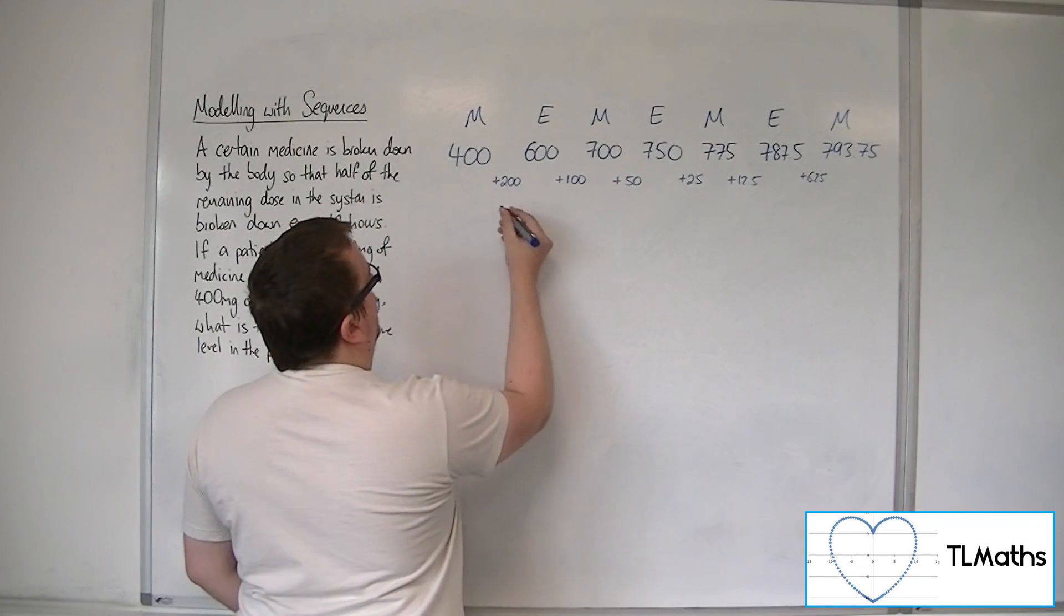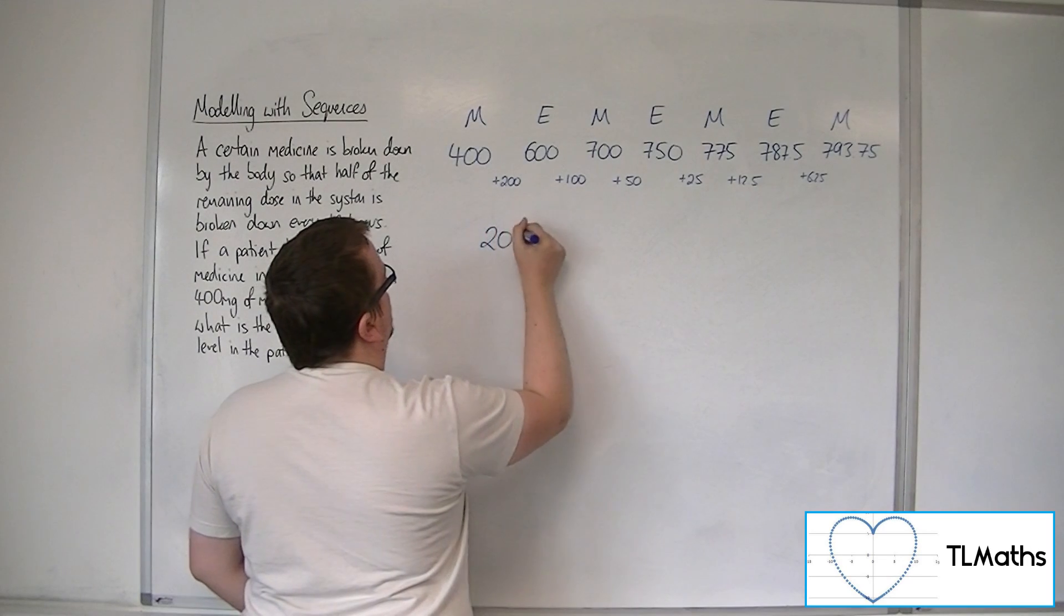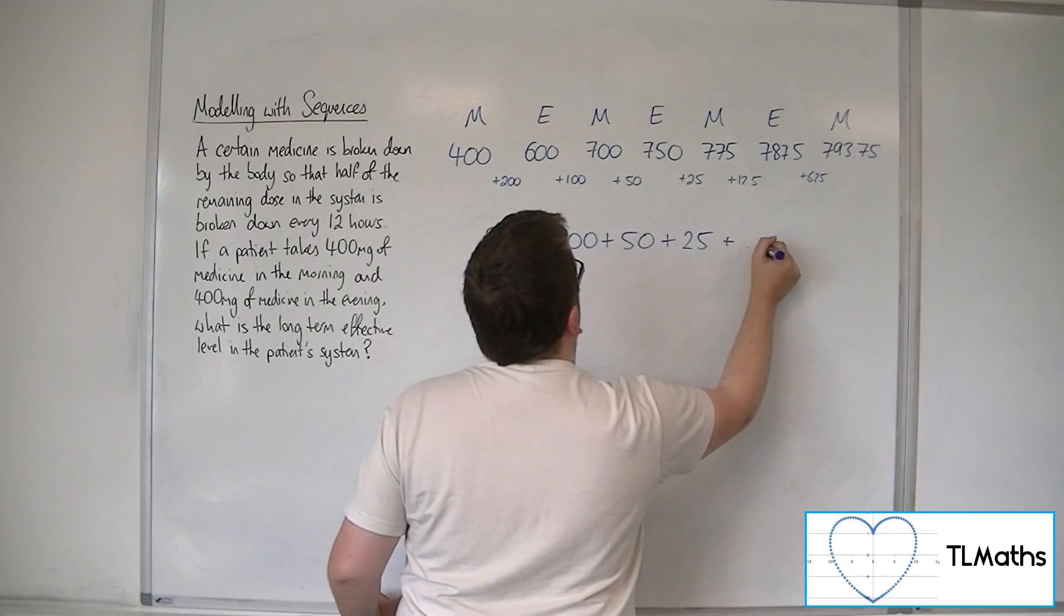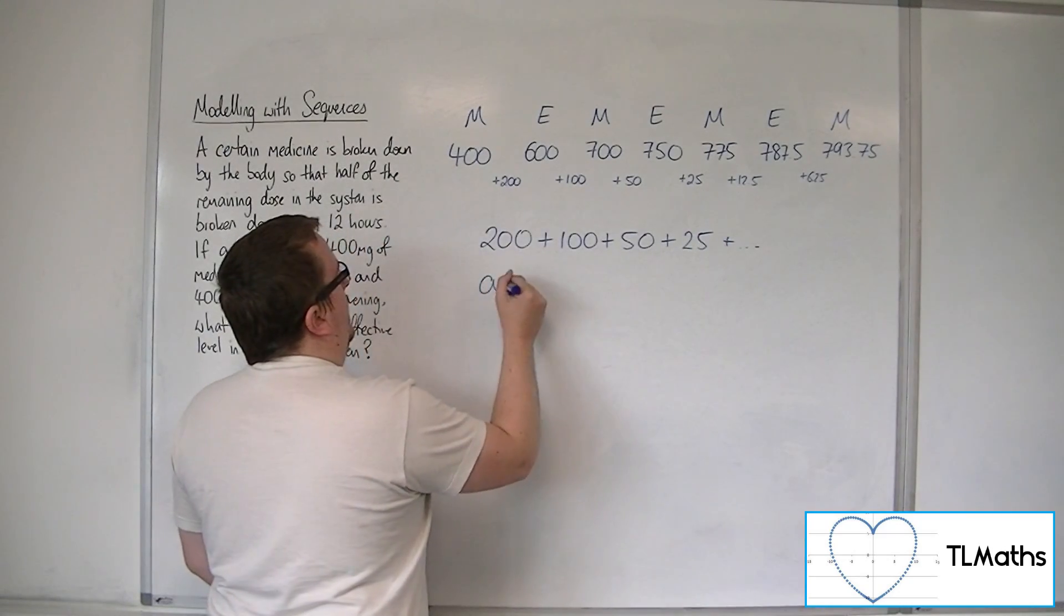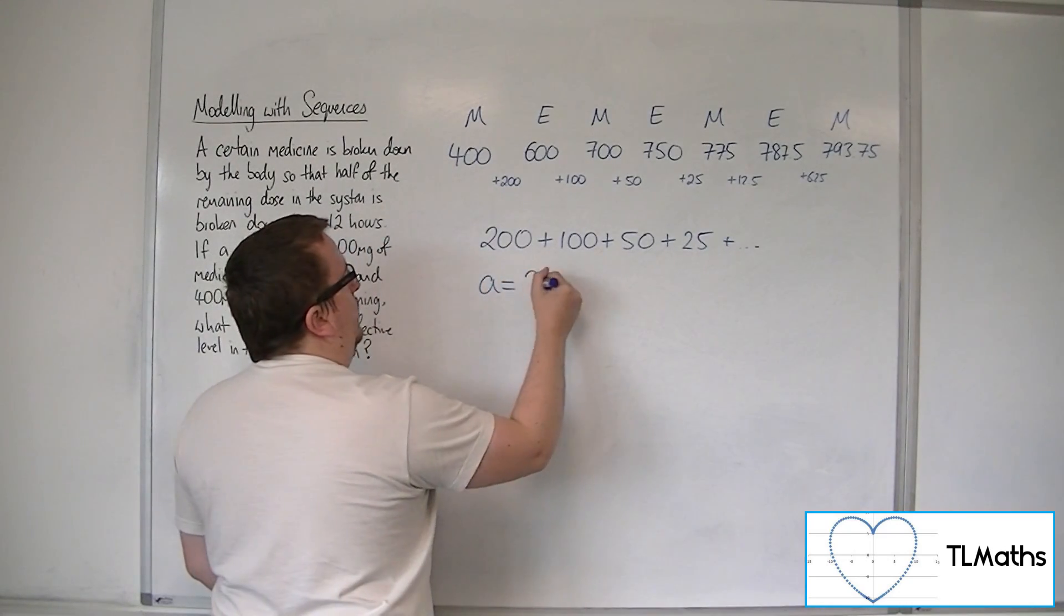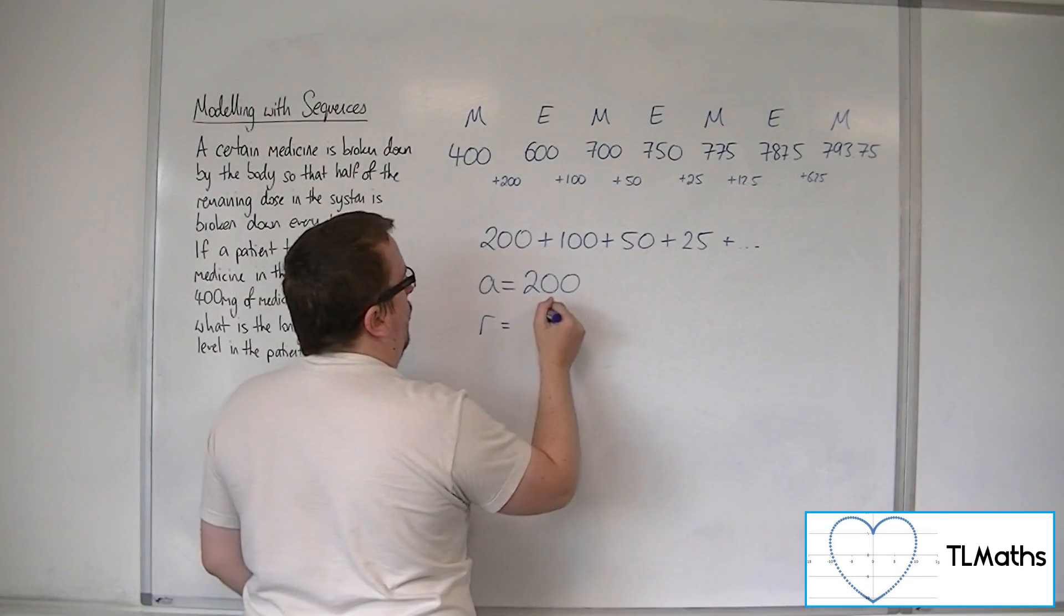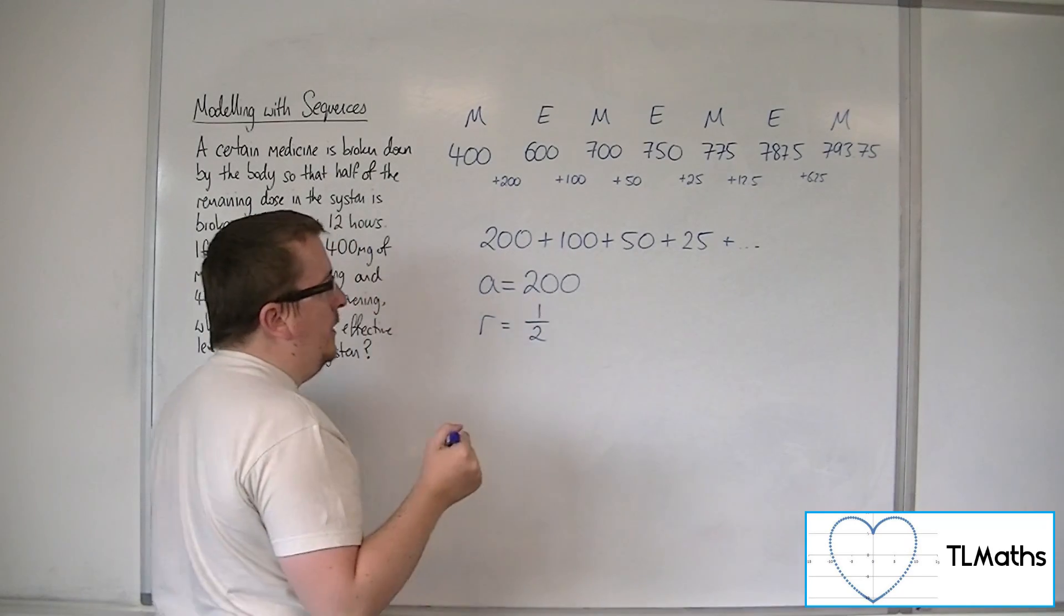So, we've got 200, plus 100, plus 50, plus 25, plus, and so on. This is a geometric sequence, where we've got a first term of 200, and a common ratio of a half, okay?